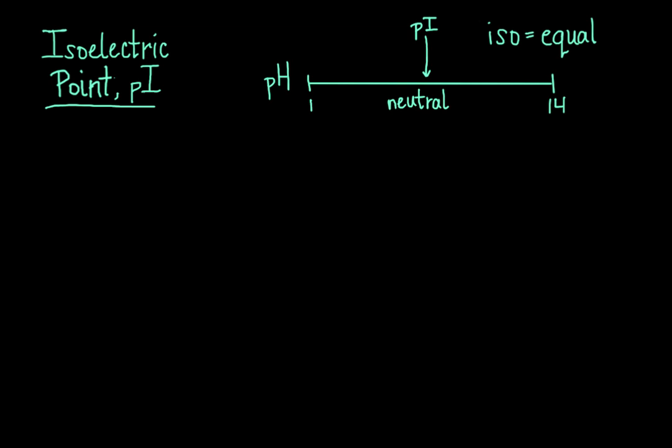So how do we figure out the isoelectric point for an amino acid? Well, let's start with the generic amino acid structure here. So now let's take a look at the two functional groups on this amino acid. Ignoring the R group, or the side chain for the time being, we're going to be talking about the amino group and the carboxylic acid group.